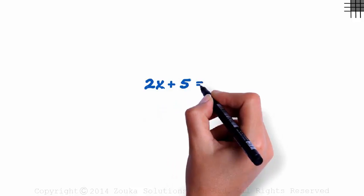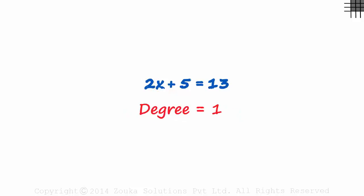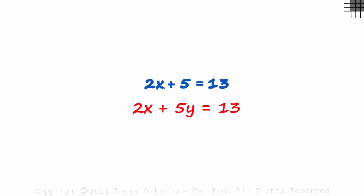2x plus 5 equals 13 is an example of a linear equation in one variable. It's linear as the degree of the polynomial is 1, and if you plot the graph of this equation, you will get a straight line. If it was 2x plus 5y, you would call it a linear equation in two variables.